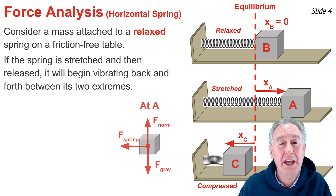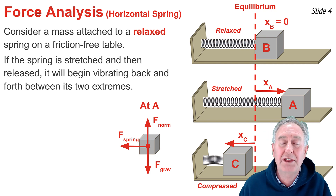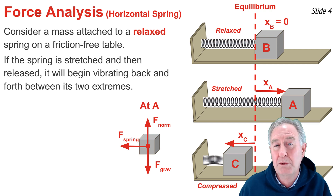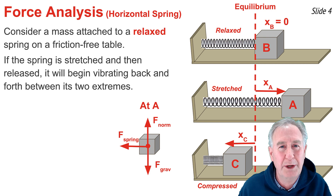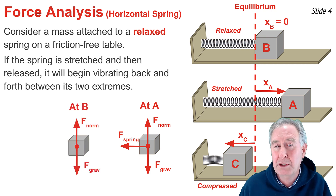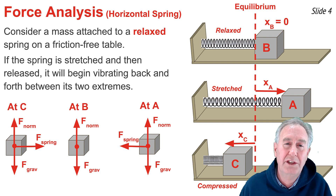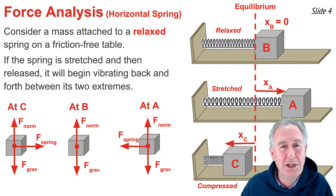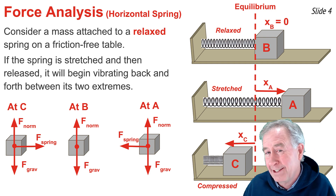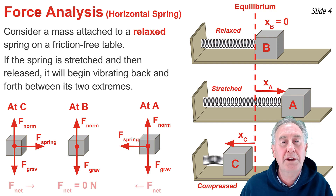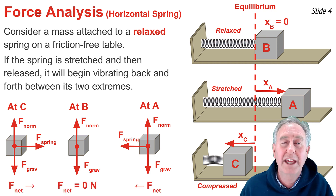We can use this information to construct free body diagrams for the mass at locations A, B, and C. At location A, there are three forces: gravity down and normal force up balance each other, but the spring force is unbalanced and the net force is directed to the left, back towards equilibrium — we call this the restoring force. At location B, there's no spring force and the gravity and normal forces balance, so there's no net force. At location C, the gravity and normal forces balance, and the spring force is the unbalanced restoring force directed to the right, back towards equilibrium.